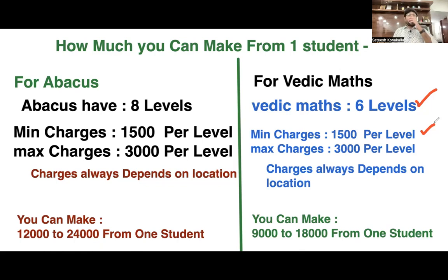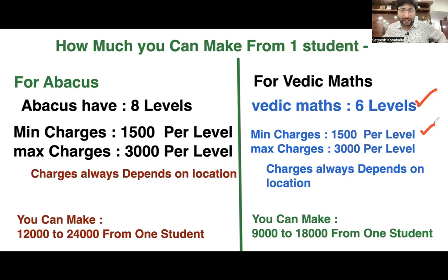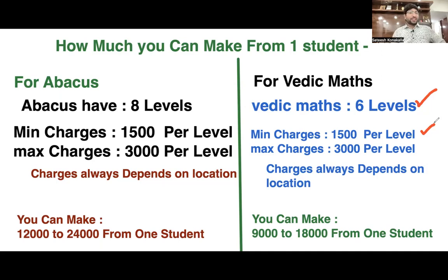Coming to Abacus: similarly, Abacus has eight levels, and the charges are 1500 rupees to 3000 rupees per level. The charges depend on location — same basis, same charges, same explanation as Vedic Math.